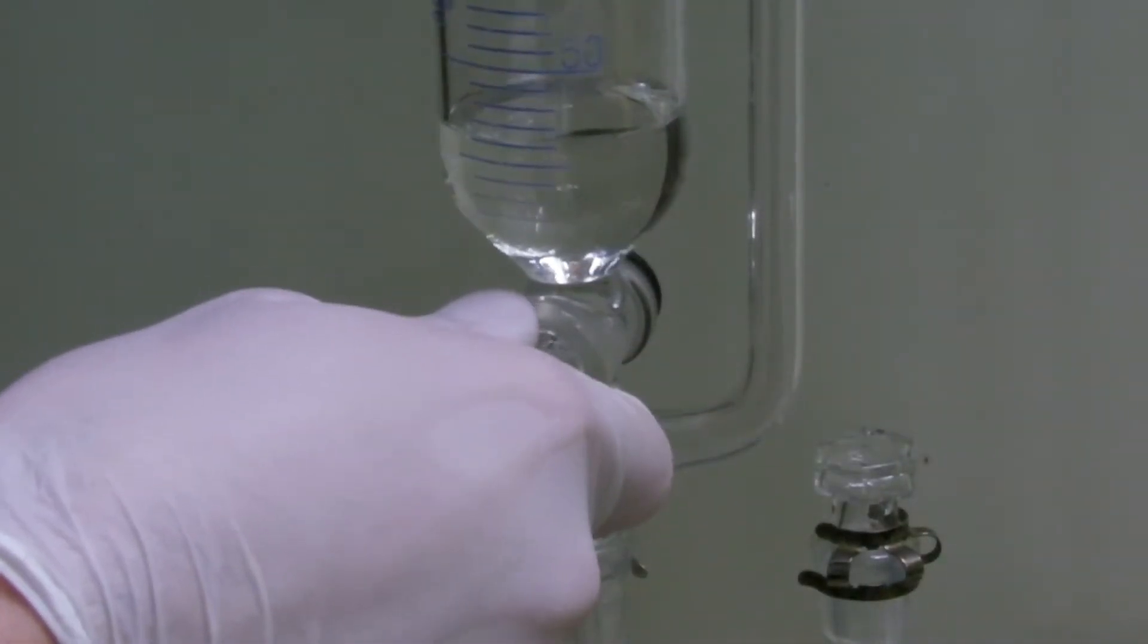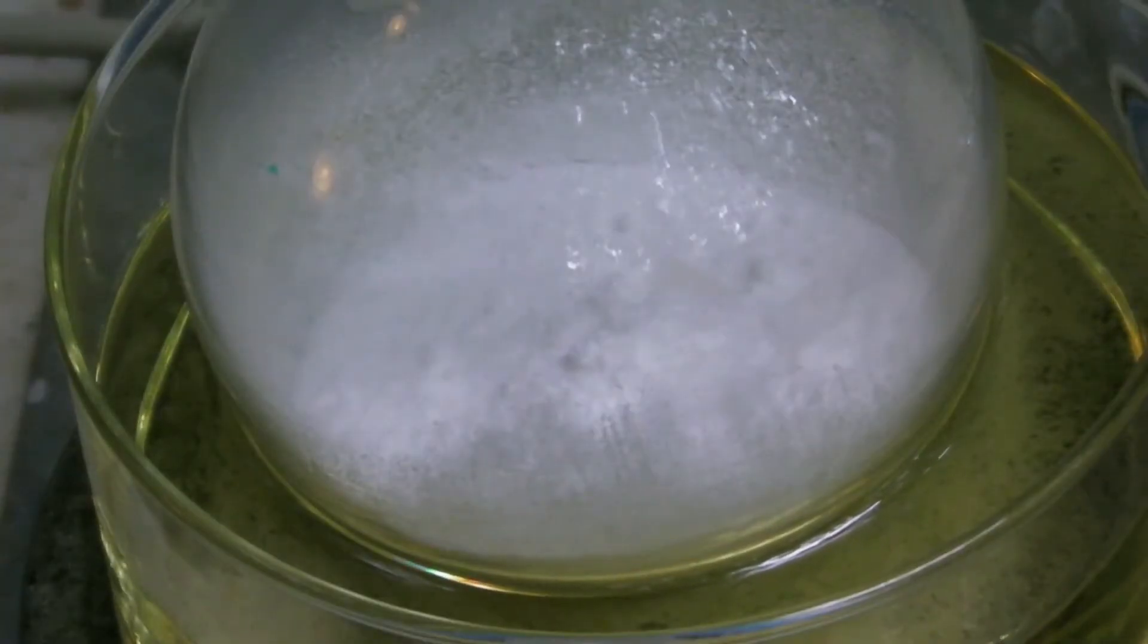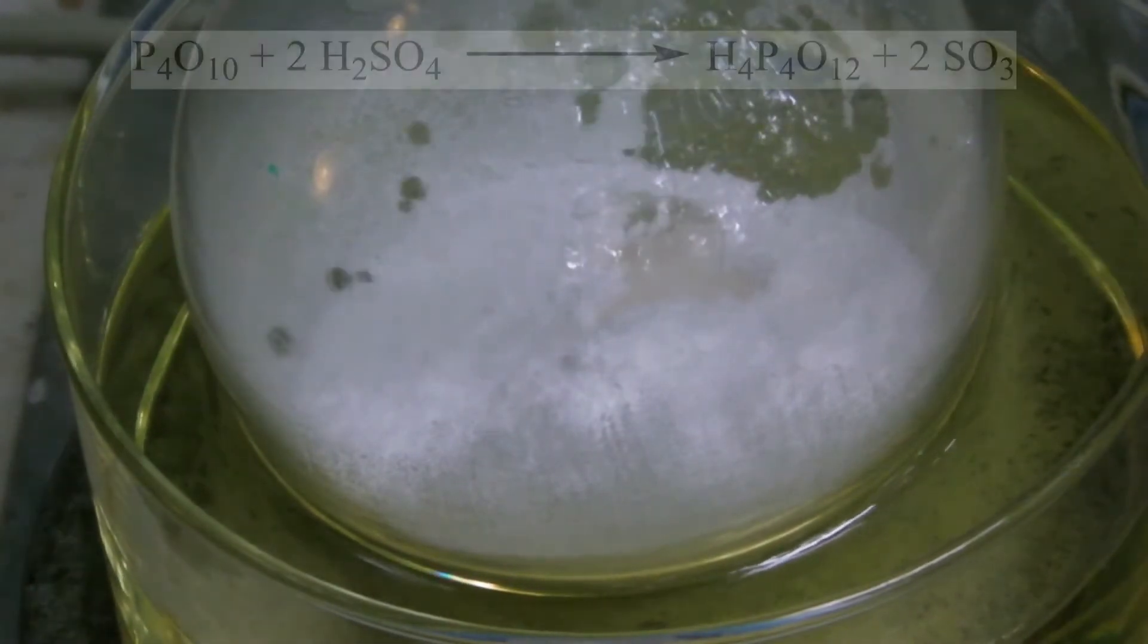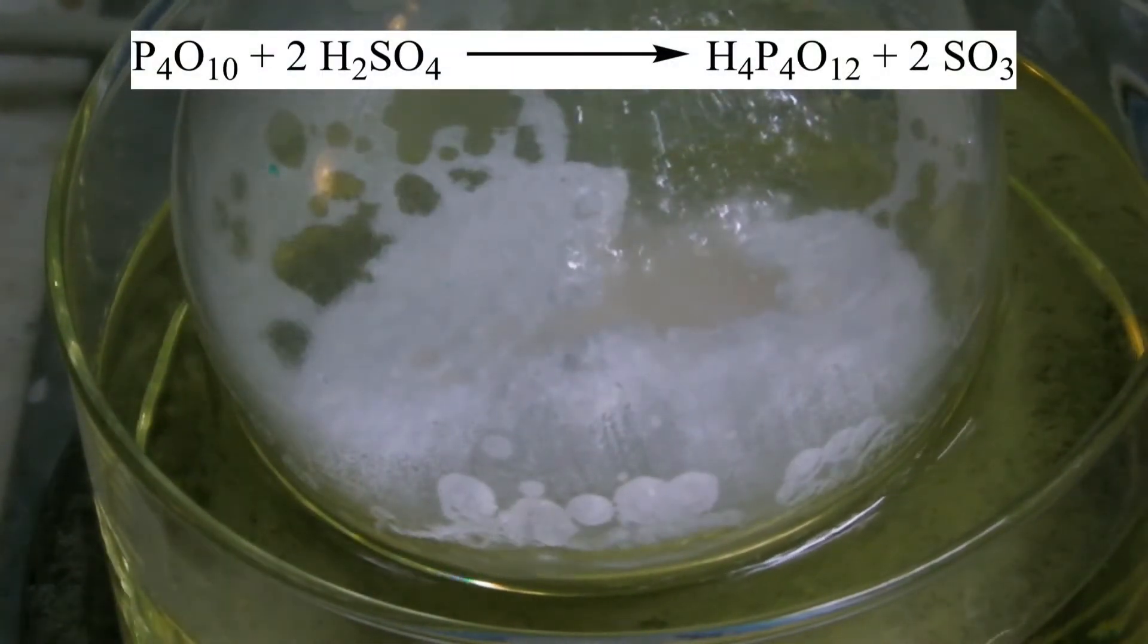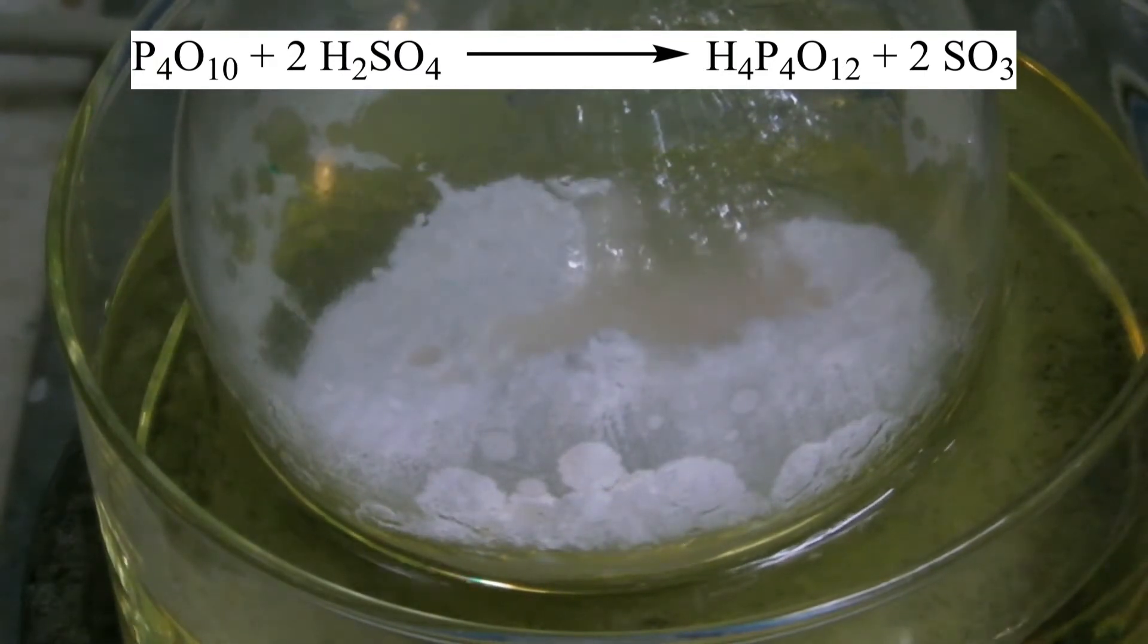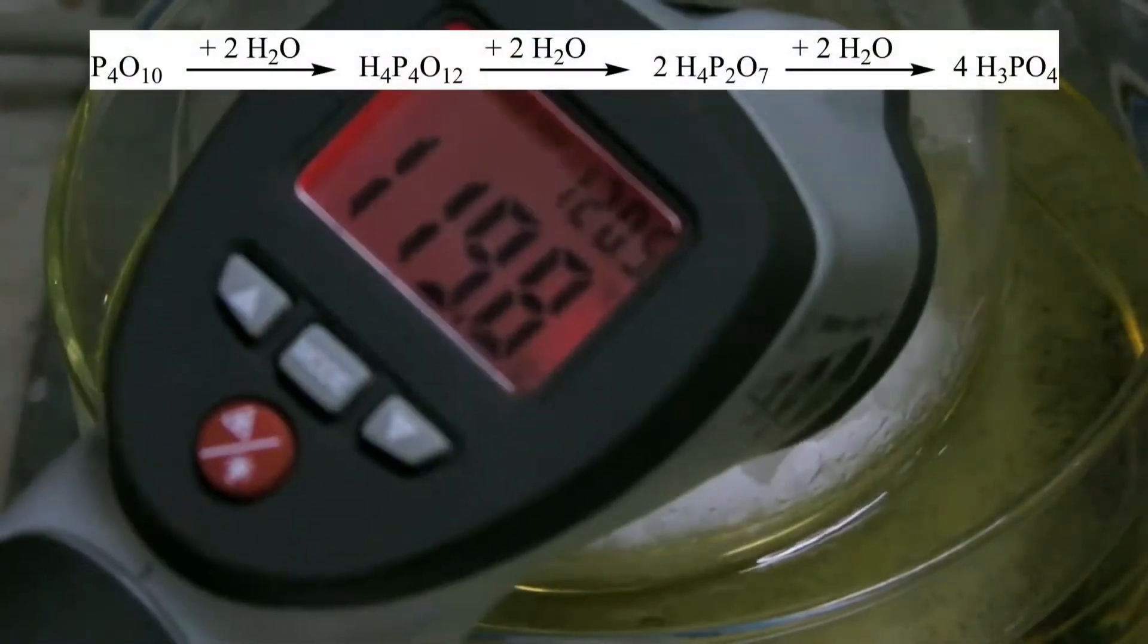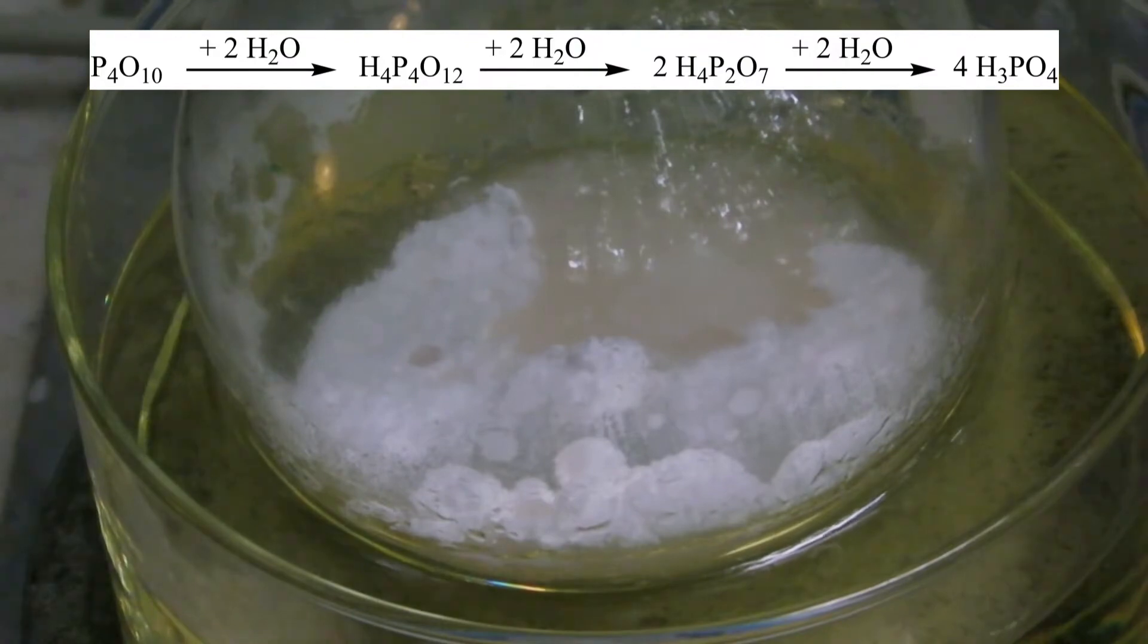Then a part of the sulfuric acid was added dropwise. The following reaction takes place: the phosphorus pentoxide reacts with the sulfuric acid to form sulfur trioxide and mainly tetra-metaphosphoric acid. This is only one of several chemical equations because phosphorus pentoxide could theoretically react with water until it forms phosphoric acid.